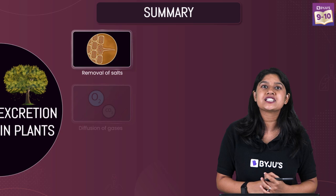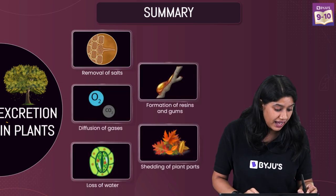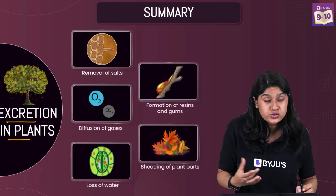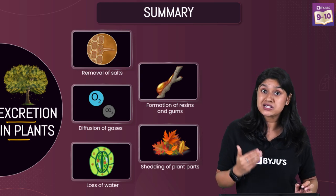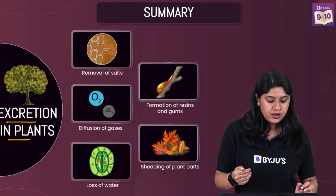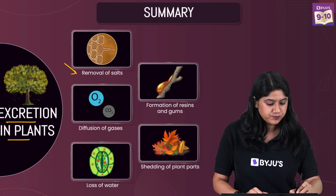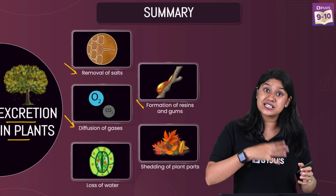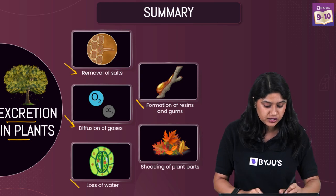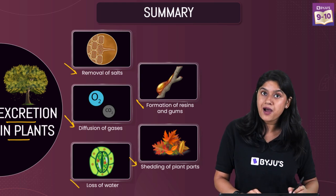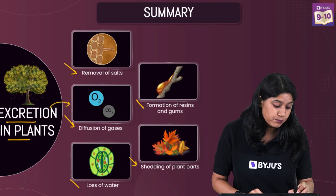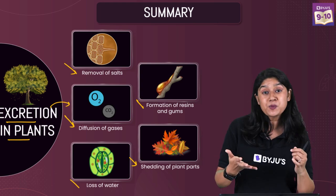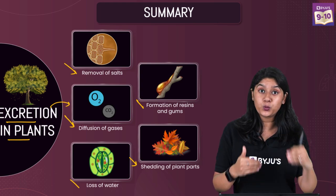Let's quickly move to the summary. Plants use different modes to excrete waste material produced in the body: removal of salts, diffusion of gases, formation of resins and gums, loss of water, and shedding of plant parts. All of these are different modes used by plants to excrete their waste.